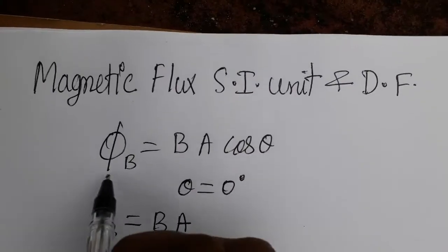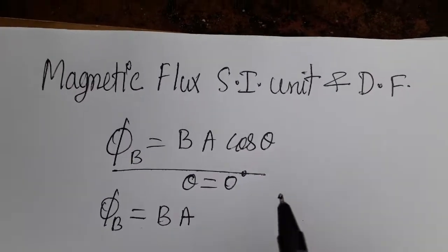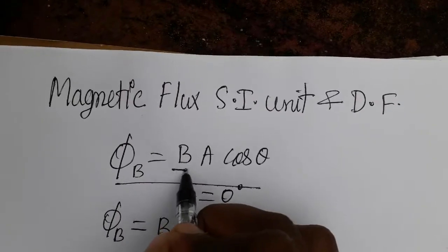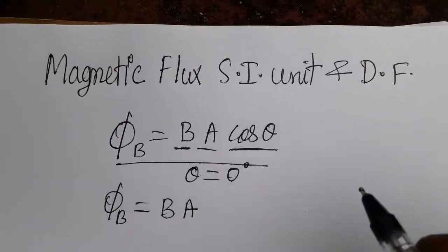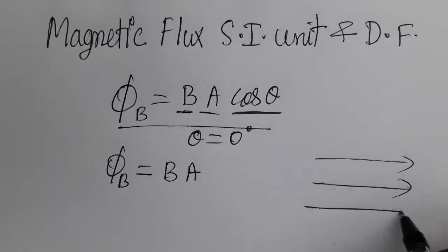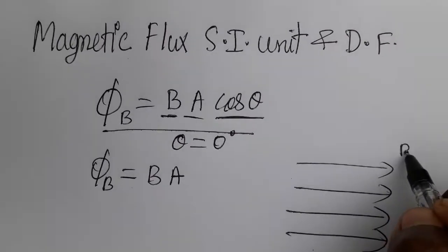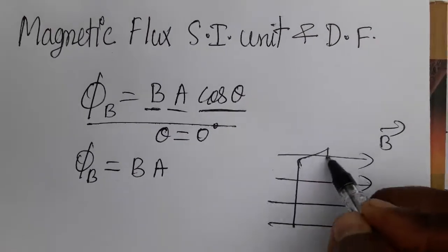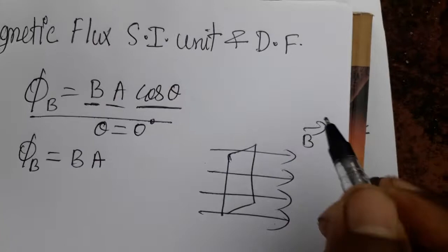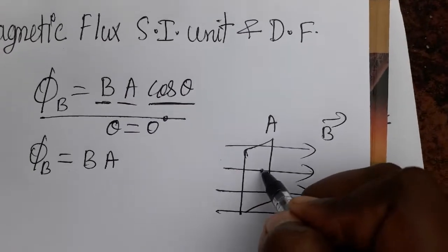Hello students, today we are going to learn about magnetic flux, its SI unit, and dimensional formula. Magnetic flux is the magnetic field into area with cos theta. We know magnetic field is a vector quantity, and we are considering a rectangular frame. This is the area, with the perpendicular line taken as the area vector.